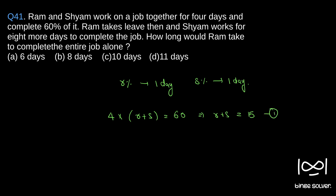Ram takes leave and Shyam works for eight more days to complete the job. 8 times S — S being the percentage of work done by Shyam in one day — equals the remaining 40 percentage of work. So 8S equals 40, which implies S equals 40 by 8, which is 5.